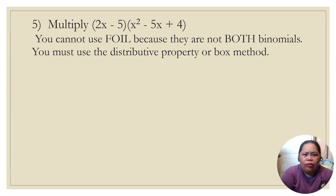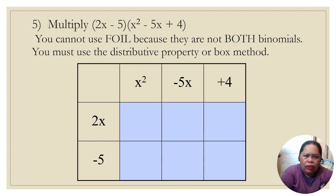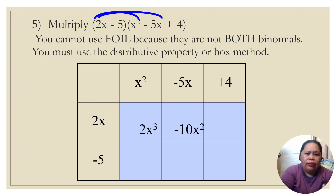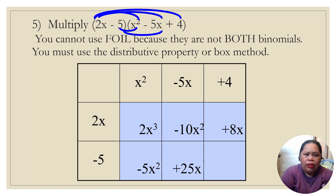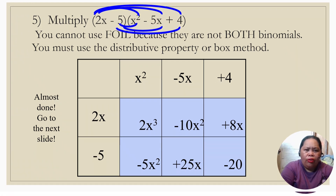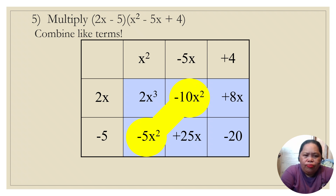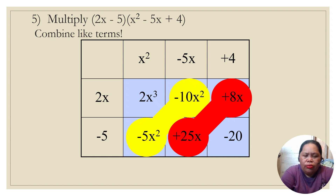You can also use the box method for a binomial times a trinomial. Set it up the same way. We get: 2x times 5x is −10x squared, 2x times 4 is 8x. Then −x squared, and −5 times 4 is −20. Combining like terms: −5x squared plus (−10x squared) gives −15x squared, and 25x plus 8x is 33x. The final answer is 2x cubed − 15x squared + 33x − 20 — the same answer as before.